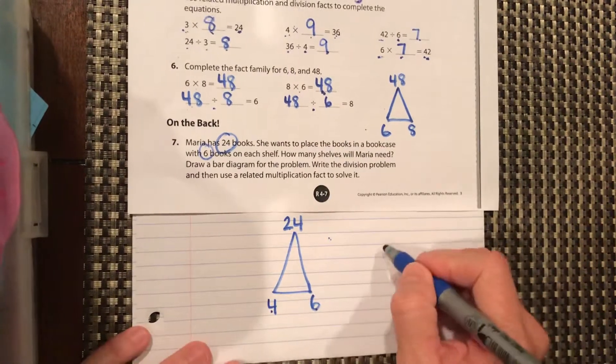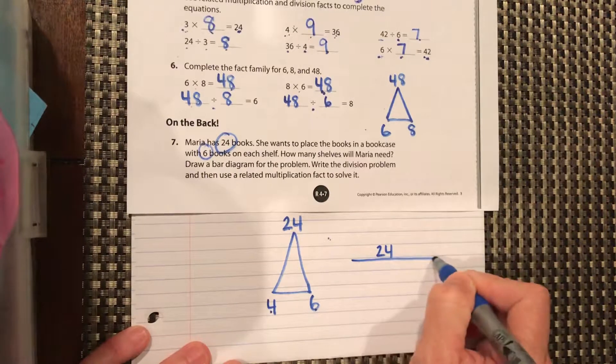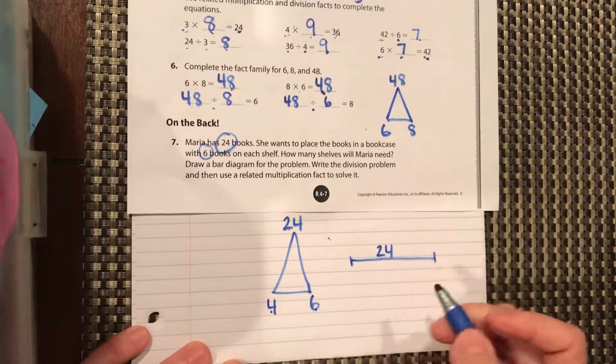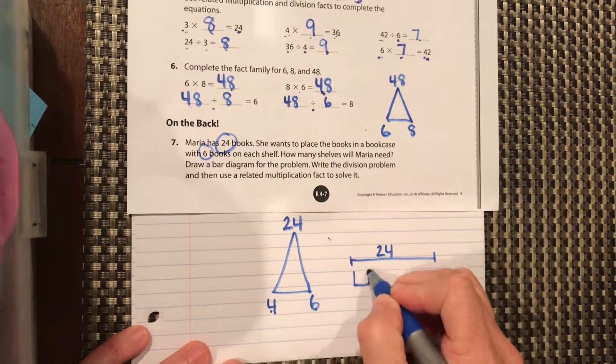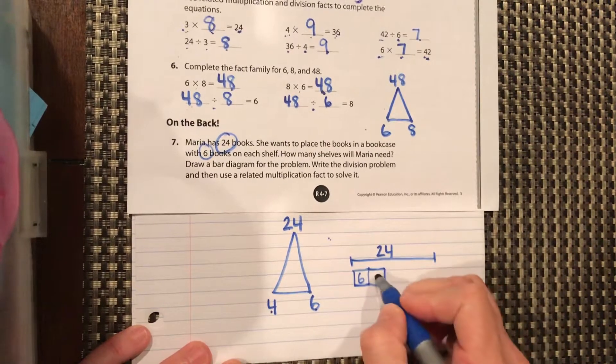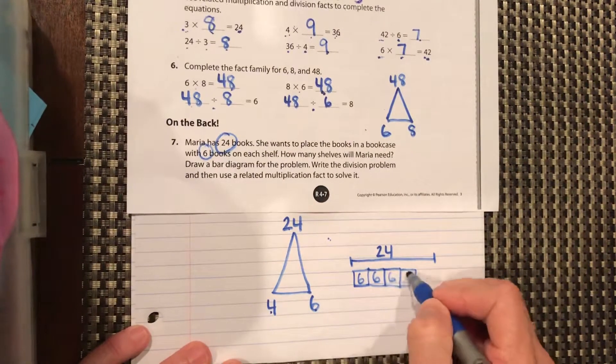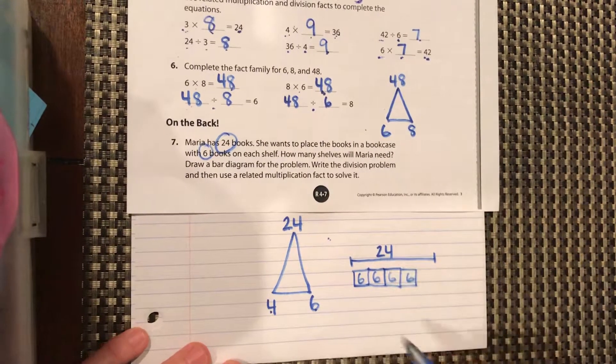They want us to do a bar diagram. Our total, 24, goes on the top. And there's going to be six books on each shelf. So we can just basically count by six until we get to 24. Six plus six is 12, and another six plus six is 12, and 12 plus 12 equals 24.